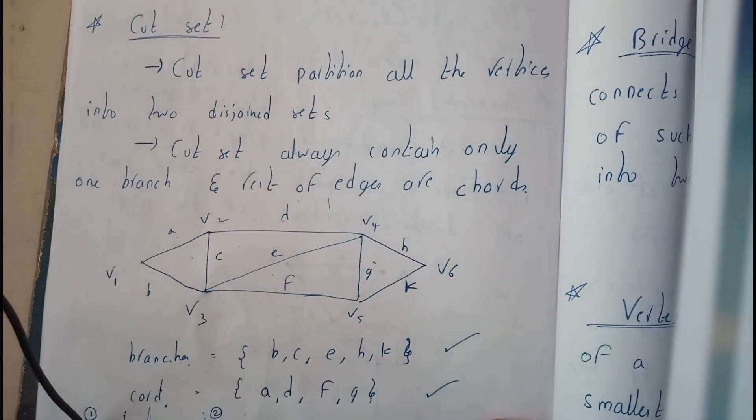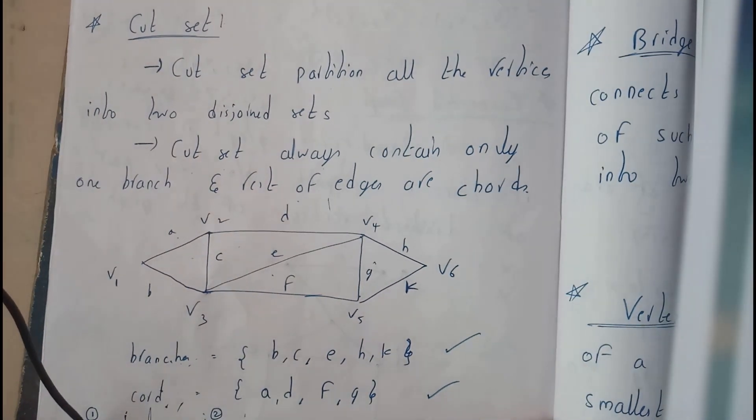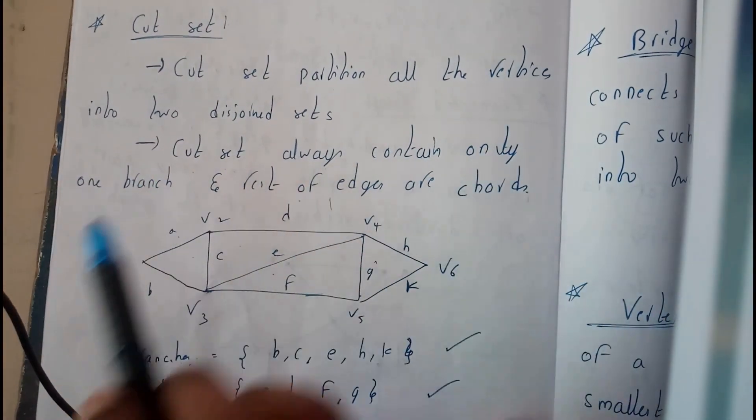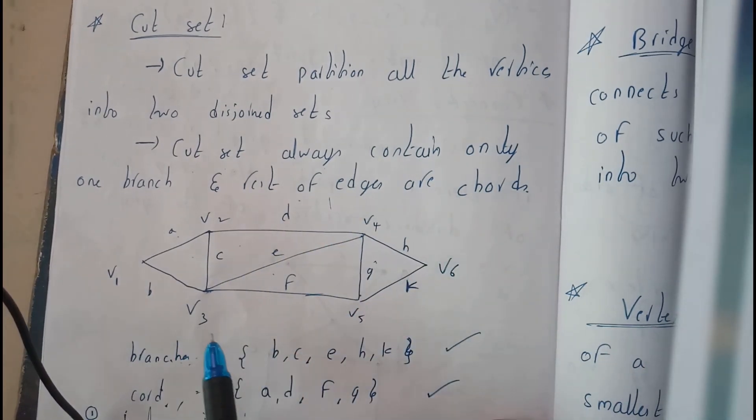They are named as branches and chords, such that each cut set always contains only one single branch and rest may be edges. I think everyone is clear with the definition.